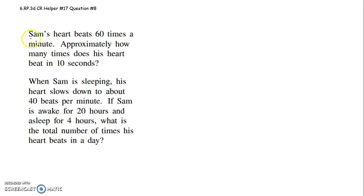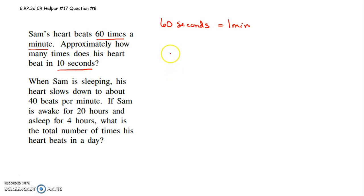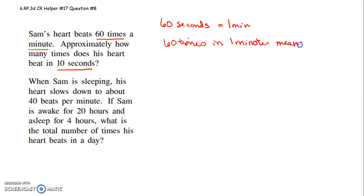So first of all, let's answer this first part. Sam's heart beats 60 times in a minute. Approximately how many times does it beat in 10 seconds? You have to know that 60 seconds equals 1 minute. So if it's 60 times in 1 minute, that means 60 times in 60 seconds.